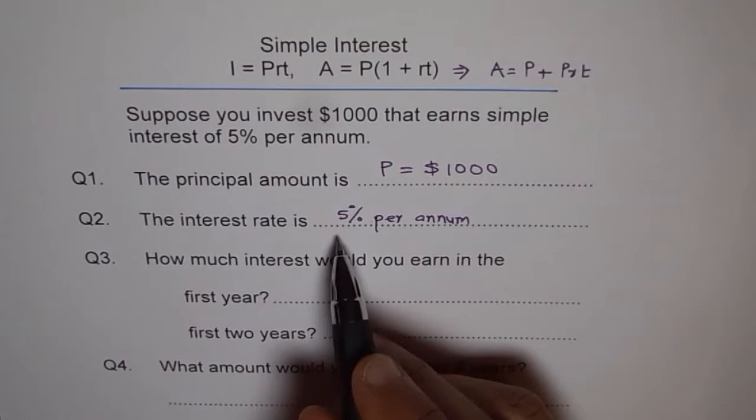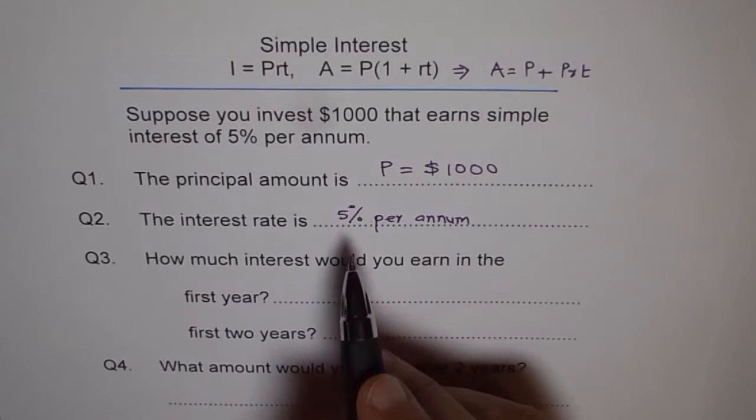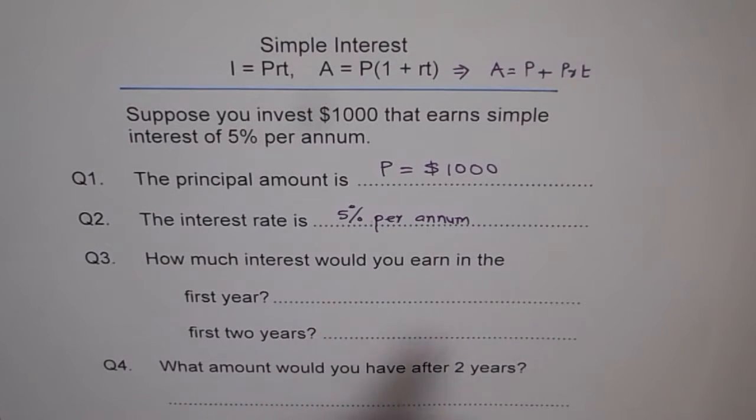But at times there could be policies which will say, well, no interest will be charged if you withdraw the money before a year. In that case you won't. So in that case it becomes a discrete function that you can only get the amount after the year.